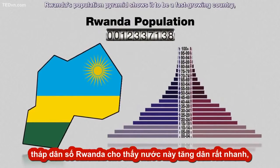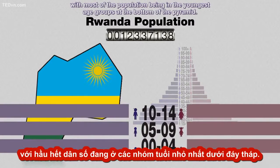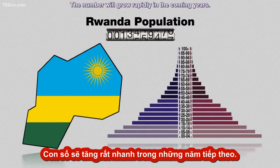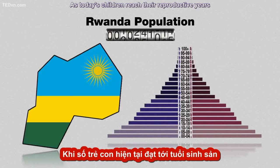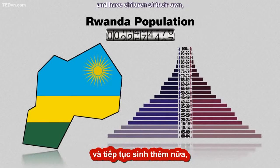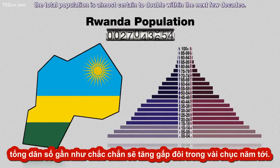For example, Rwanda's population pyramid shows it to be a fast-growing country. With most of the population being in the youngest age groups at the bottom of the pyramid, the numbers will grow rapidly in the coming years. As today's children reach their reproductive years and have children of their own, the total population is almost certain to double within the next few decades.